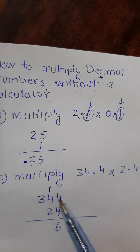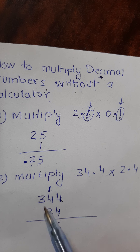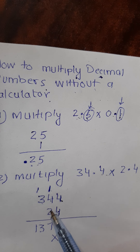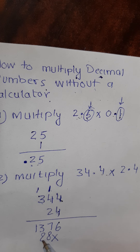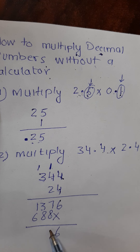4 times 4 is 16, carry 1. 4 times 4 is 16, plus 1 is 17, carry 1. 4 times 3 is 12, plus 1 is 13, carry 1. Then 2 times 4 is 8, 2 times 4 is 8, 2 times 3 is 6. Combining: 6, then 8 and 7 gives 15.